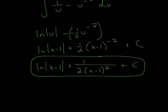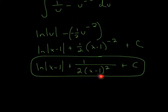Depending on your professor's preference, if they don't want a negative exponent, you can pull it to the bottom — so it'll be 1 over 2 times (x minus 1) squared. Then ln of (x minus 1), and don't forget the plus C. I hope that helped, and thanks for watching.